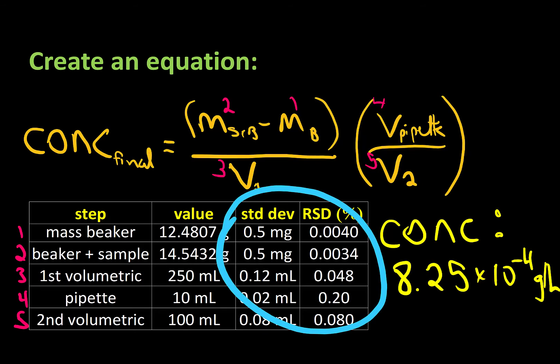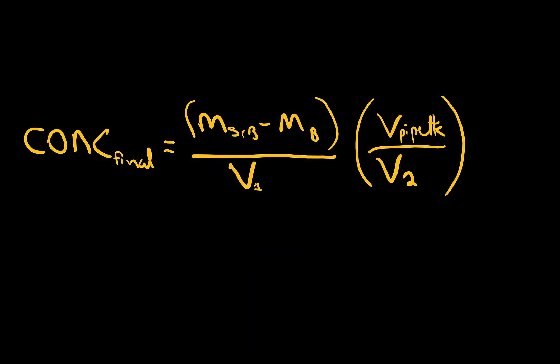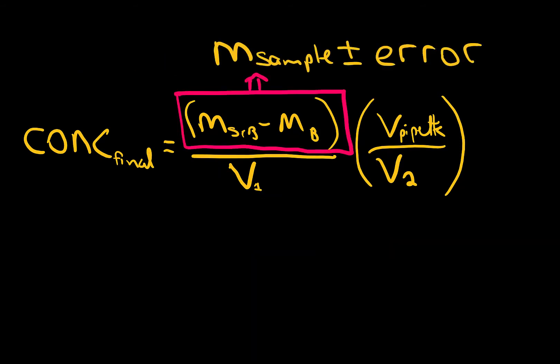What we're really after here is what is the uncertainty? How does the error in each of the individual components factor into the error in our final concentration? So for that we still have to turn to the equation that we've created. And we realize that this step of the equation is an addition subtraction step. Each of those masses has error, but we're going to have to combine those errors together.